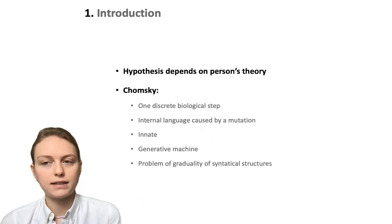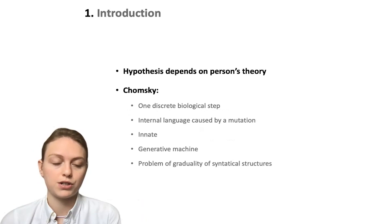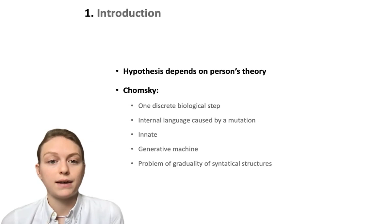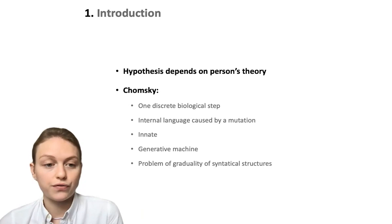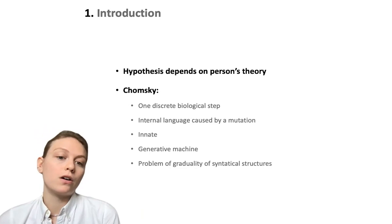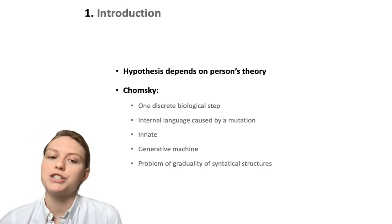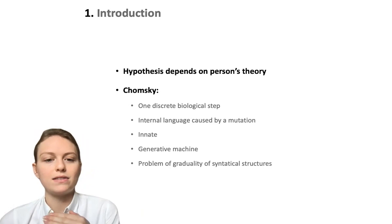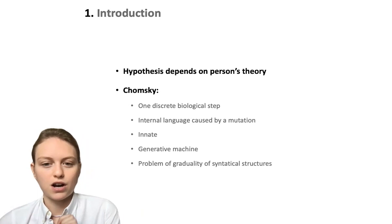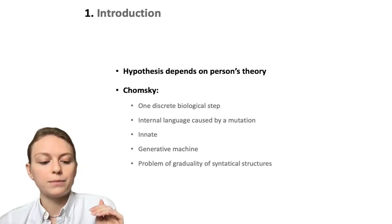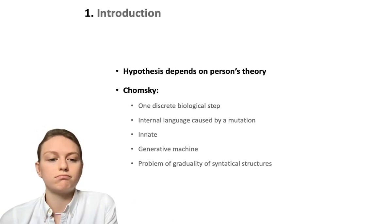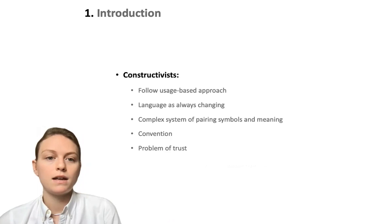There are two main schools in this debate. The first is the Chomskyan school. They believe that language emerged as one discrete biological step — it began as an internal language caused by a single mutation, it is innate, and therefore the search for how it emerged is not very useful. They see language as a generative machine that either works or doesn't. This leads to the first problem: the problem of graduality of syntactical structure. Since language is a generative machine that either works or doesn't, how could language gradually evolve? The answer within this framework is that it can't — it either works or it does not.